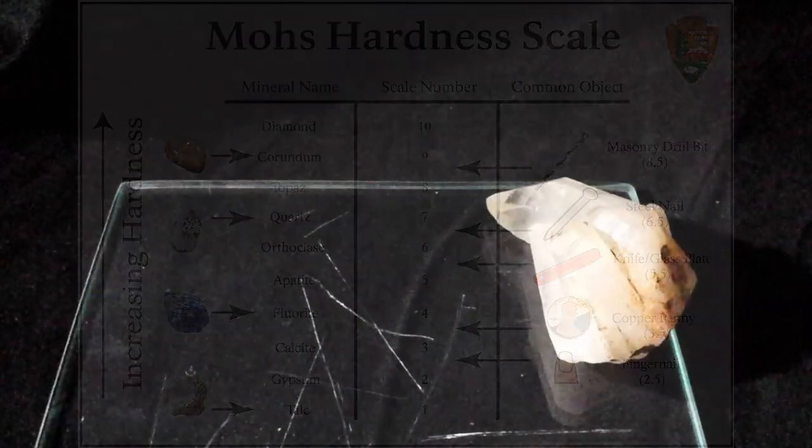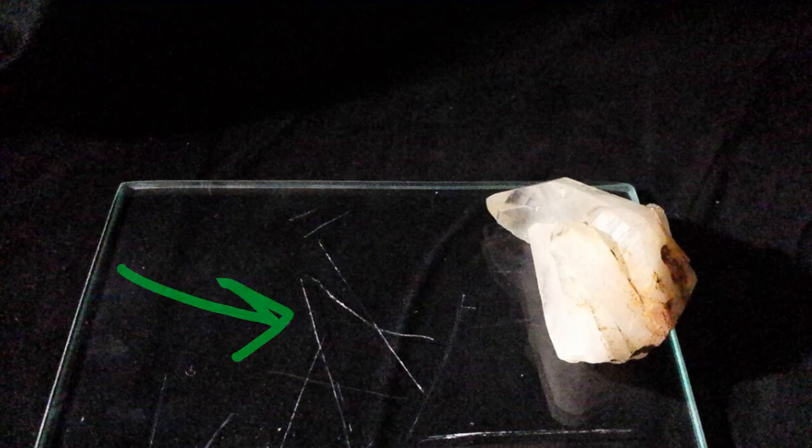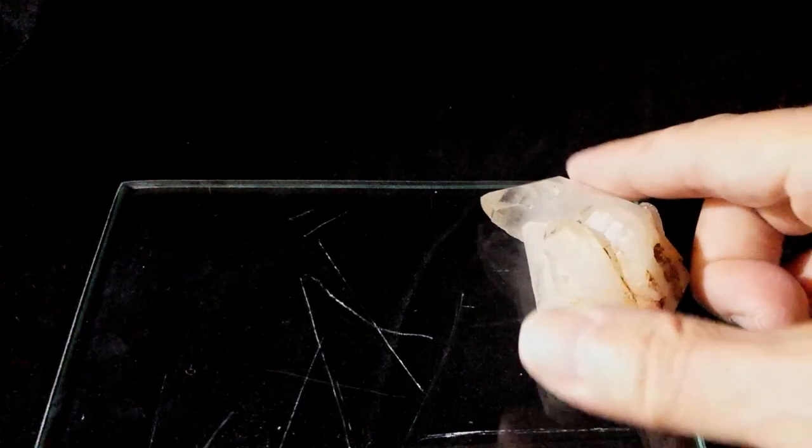So, for example, if an object were harder than a glass plate, it would leave a scratch on the plate. Here's how to test a mineral against a glass plate.